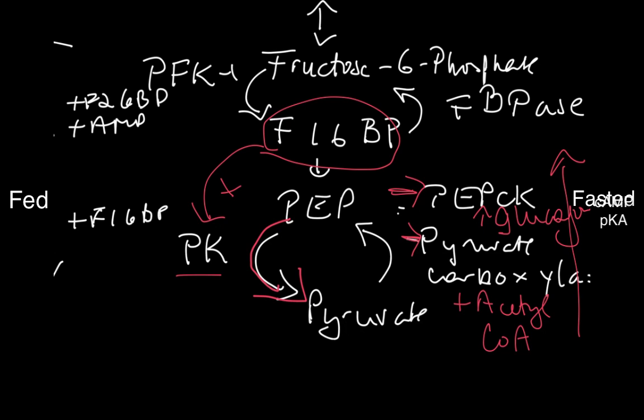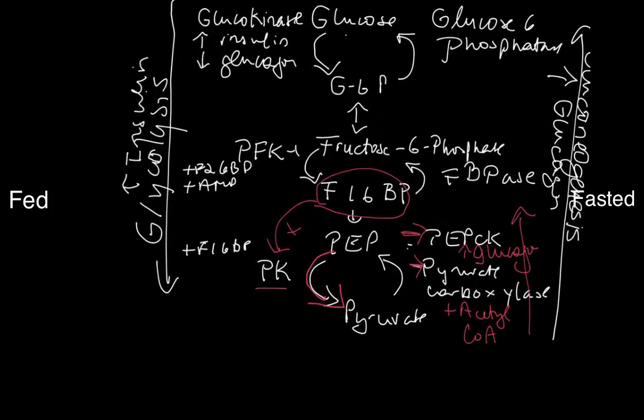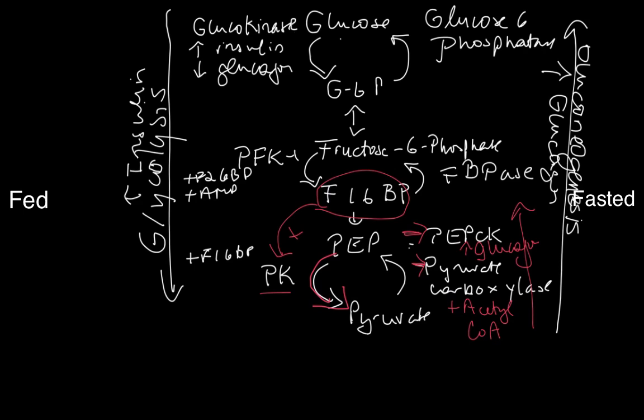In summary, the futile cycles are basically what would happen if there wasn't regulation. Glycolysis shares enzymes with gluconeogenesis. I don't have them all listed, but there are several enzyme steps that are shared and reversible in glycolysis.